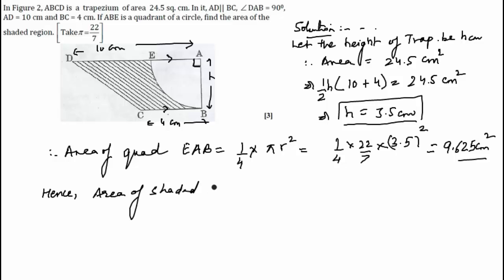Hence, area of shaded region is equal to area of trapezium minus area of quadrant. Area of trapezium is 24.5 centimeter square minus 9.625 centimeter square.